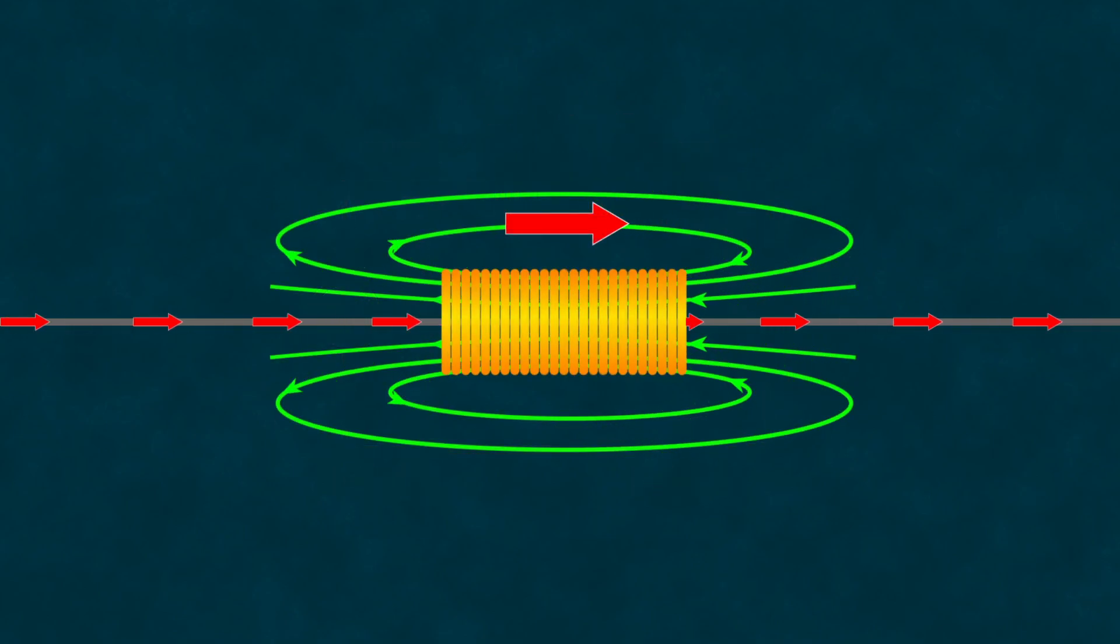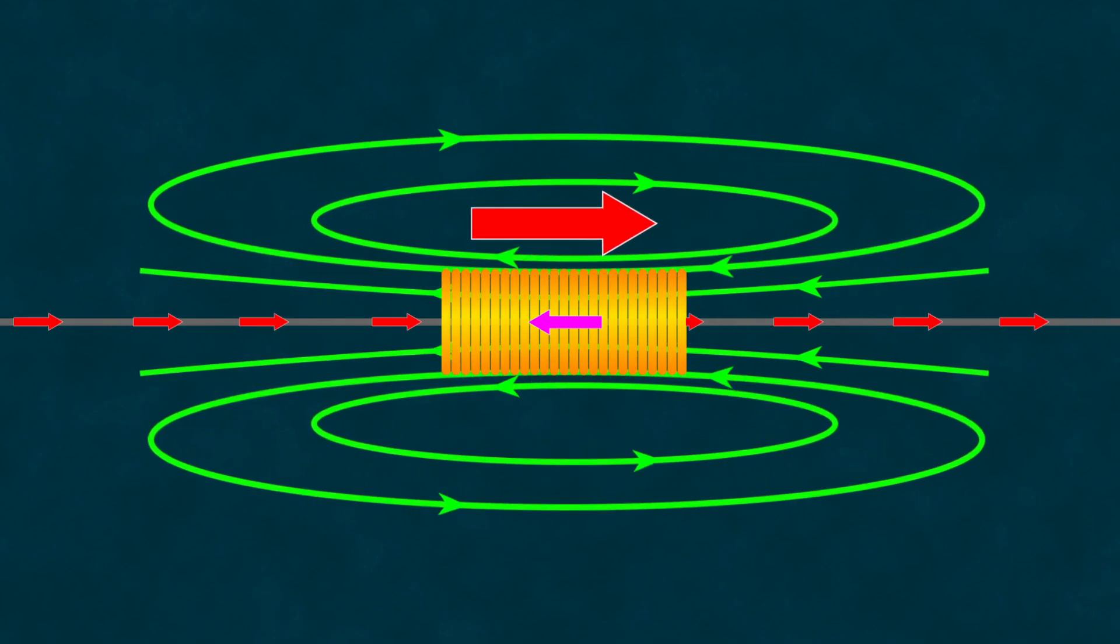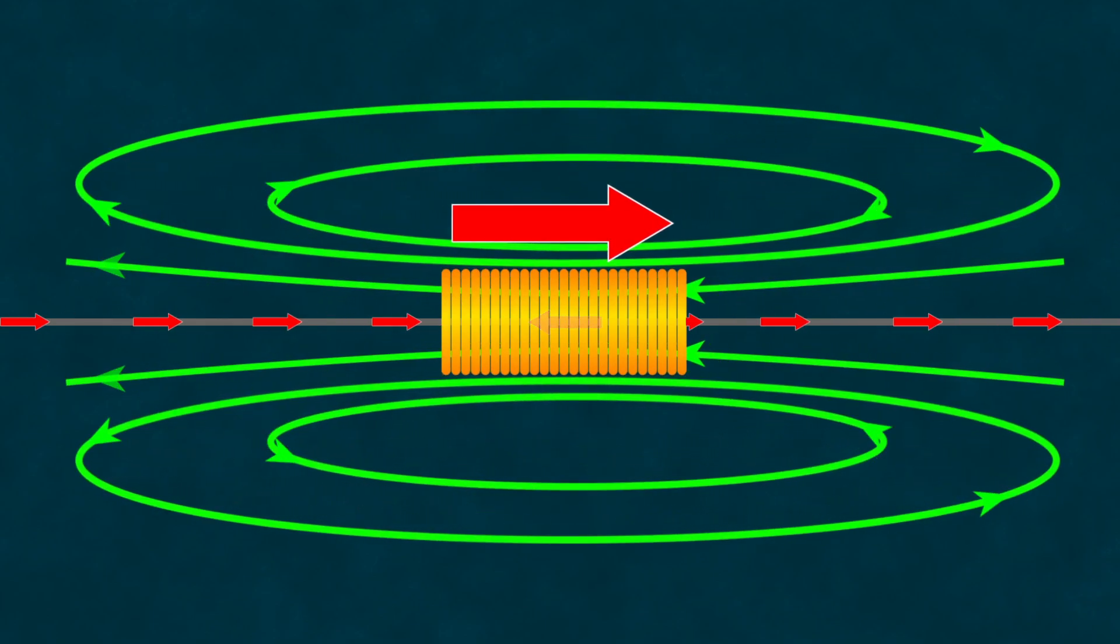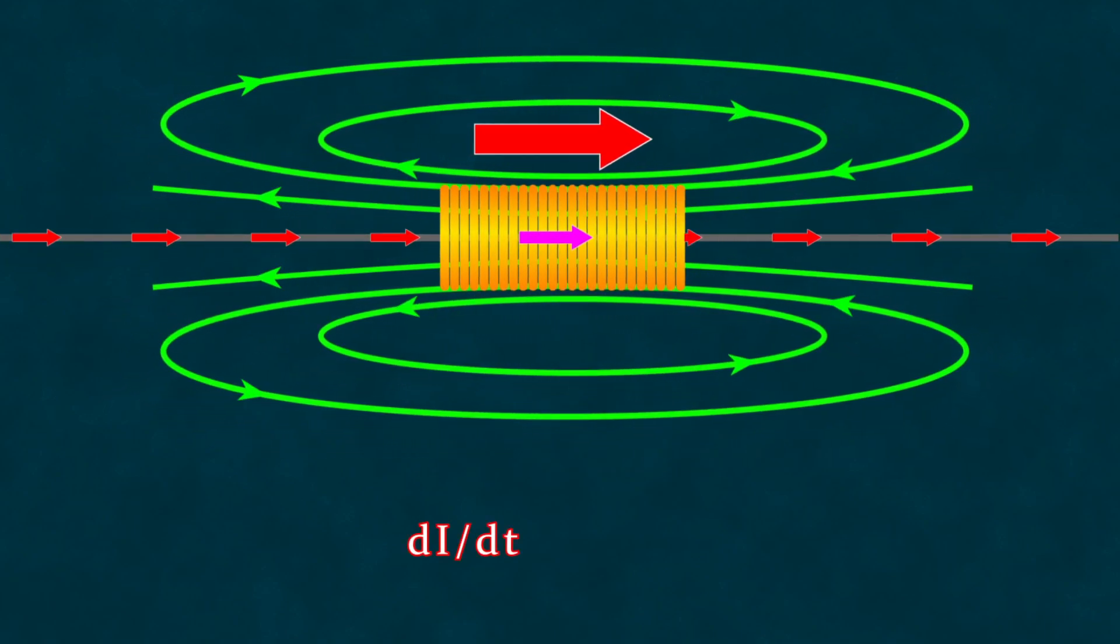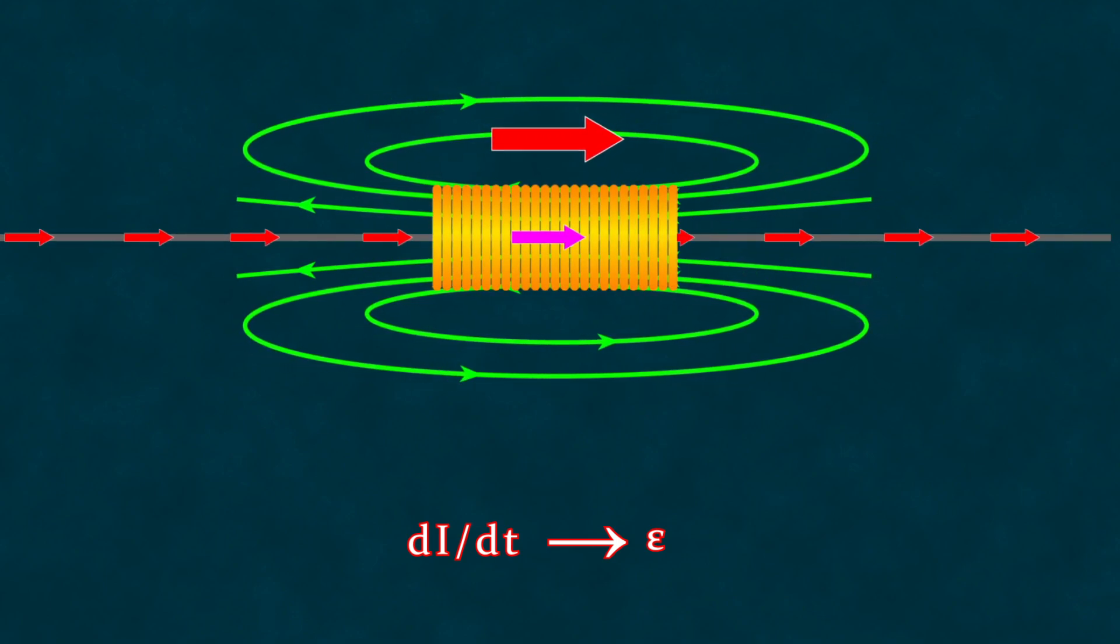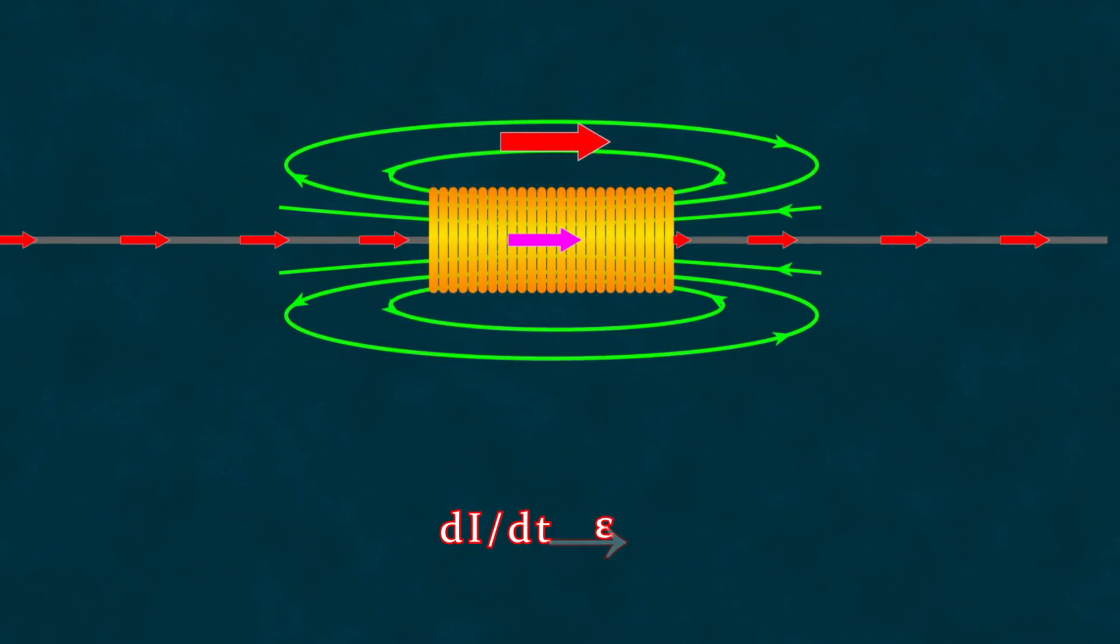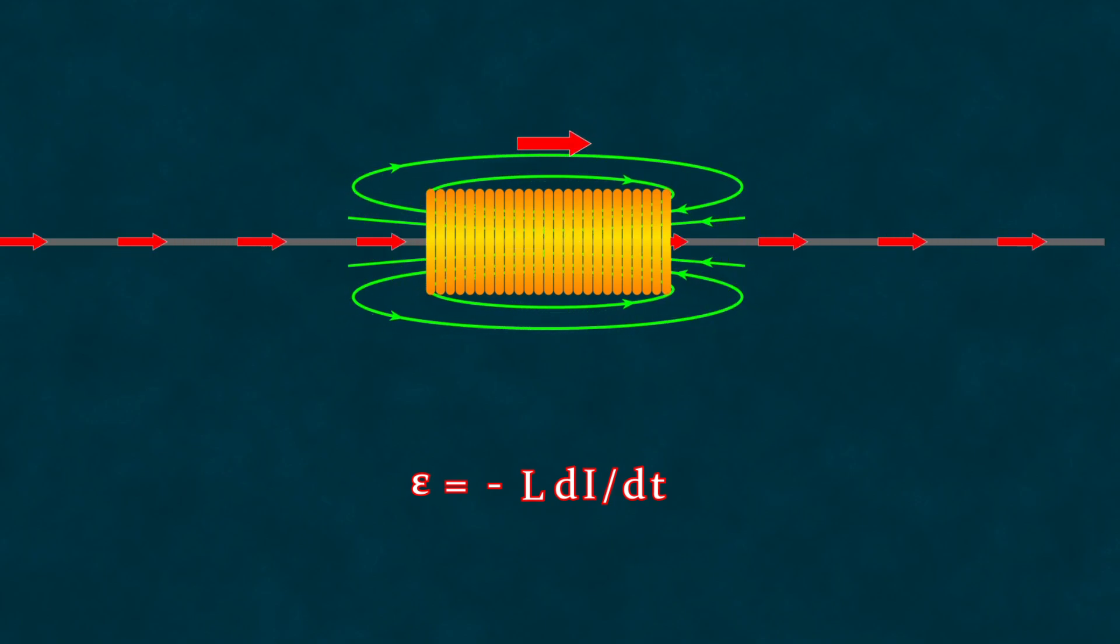An inductor can store energy in the form of a magnetic field. When the current in the circuit changes, the inductor generates an electromotive force, EMF, that tries to counteract this change. The change in current is the cause, and the self-induced EMF is the effect, with the relationship between the cause and effect determined by the coil's parameters, specifically, its inductance. Inductance indicates the EMF generated in a specific coil when the current through it changes.